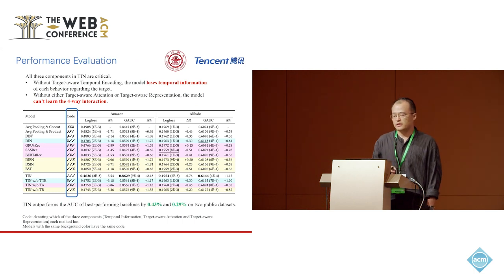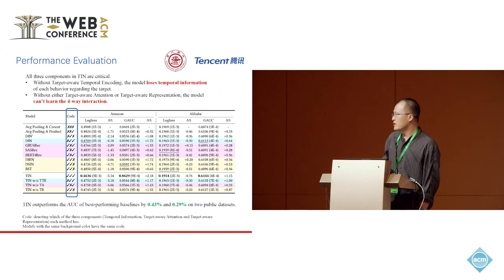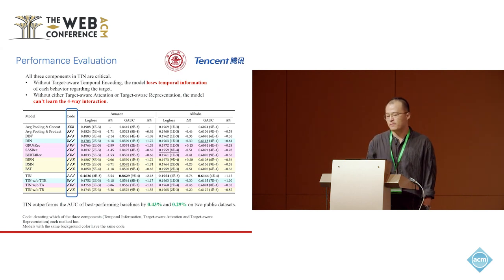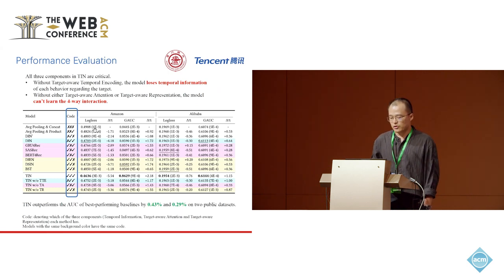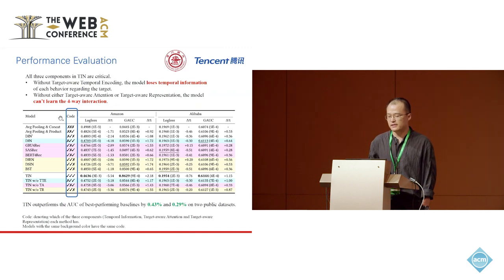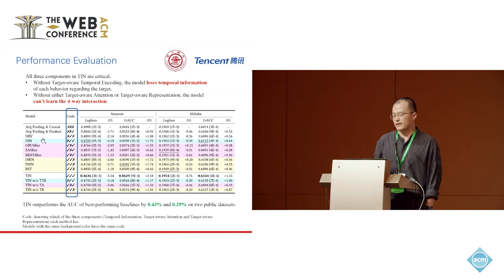All three components in TRN are critical. Without target-aware temporal encoding, the model has no temporal information for each behavior regarding the target. Without either target-aware attention or target-aware representation, the model can't learn the four-way interaction. We assign a code for each model according to the existence of these three components in TRN, shown in this column, and models with the same color share the same code.